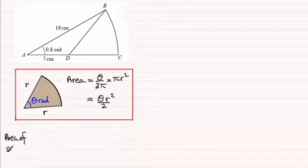Area of sector ABC is going to equal the fraction 0.8 radians, 0.8 divided by 2π. It's that fraction of the area of the complete circle which would be π times the radius squared, π times the radius is 16.